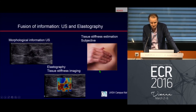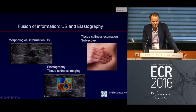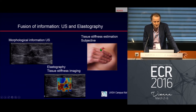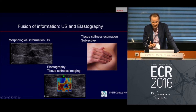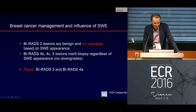What you have is the morphological information of ultrasound, and we combine this with tissue stiffness estimation. What we get is elastography — a result that gives us tissue stiffness imaging.